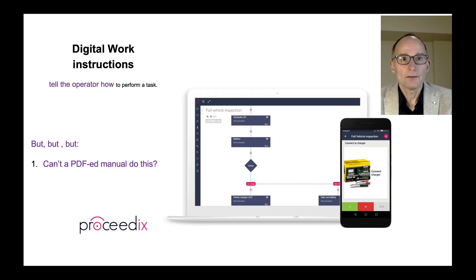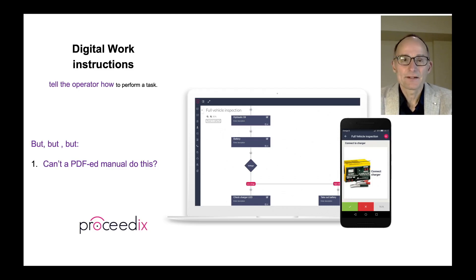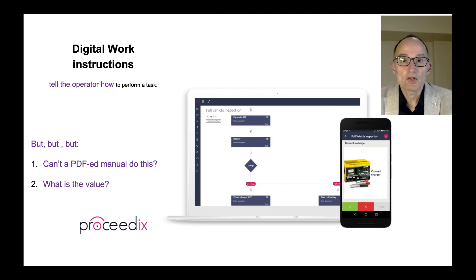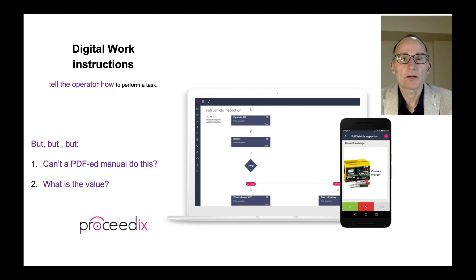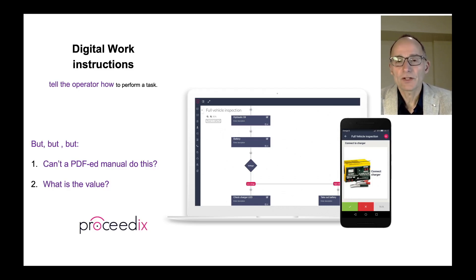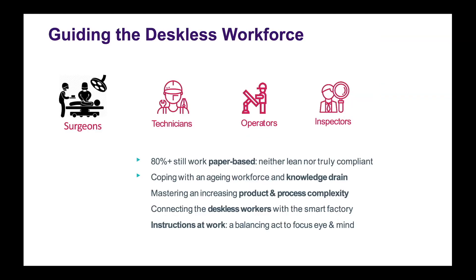Only upon checking the green button can the operator proceed to the next task — hence the name of the company with which we collaborated: Proceedix. Good work instructions ensure uniformity in execution and reduce mistakes, thereby speeding up work and increasing efficiency. For which workflows are digital work instructions most valuable? Proceedix targets the deskless workforce. More than 80 percent of operations are still paper-based, which we refer to as digital level zero.